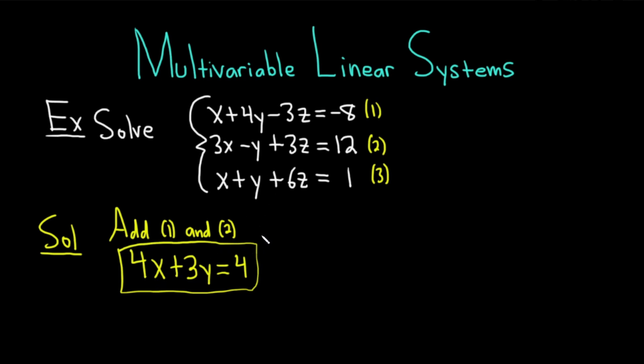But now we're going to pick another two equations and get rid of the z. How about we pick equation 2 and equation 3. You'll notice though that we really need this 3z to be a negative 6z. So first I'm going to multiply equation 2 by negative 2. Multiplying it by negative 2 we get negative 6x, positive 2y, and then negative 6z equals negative 24.